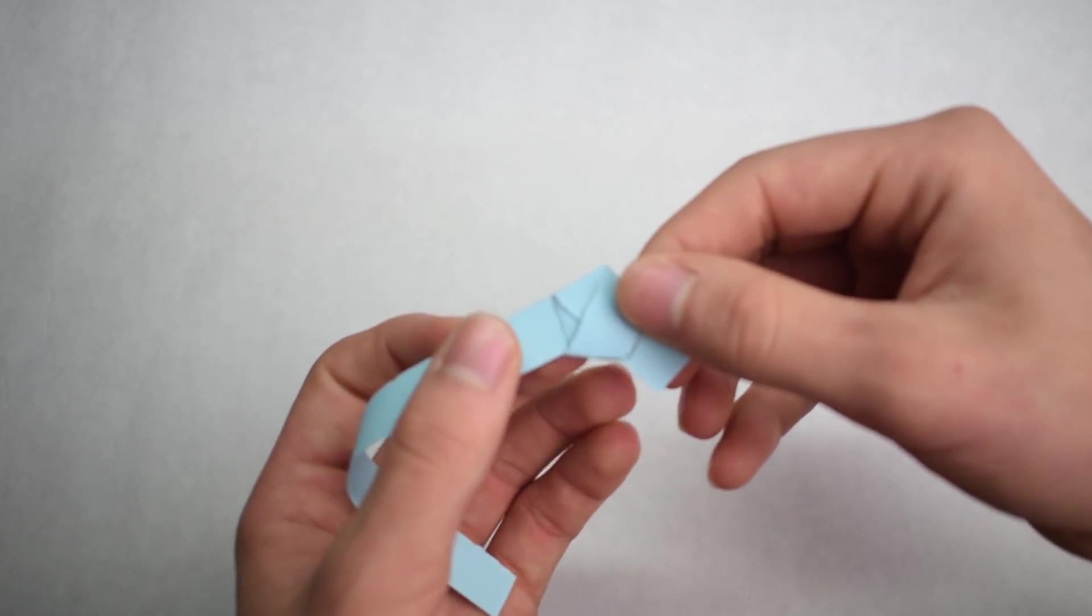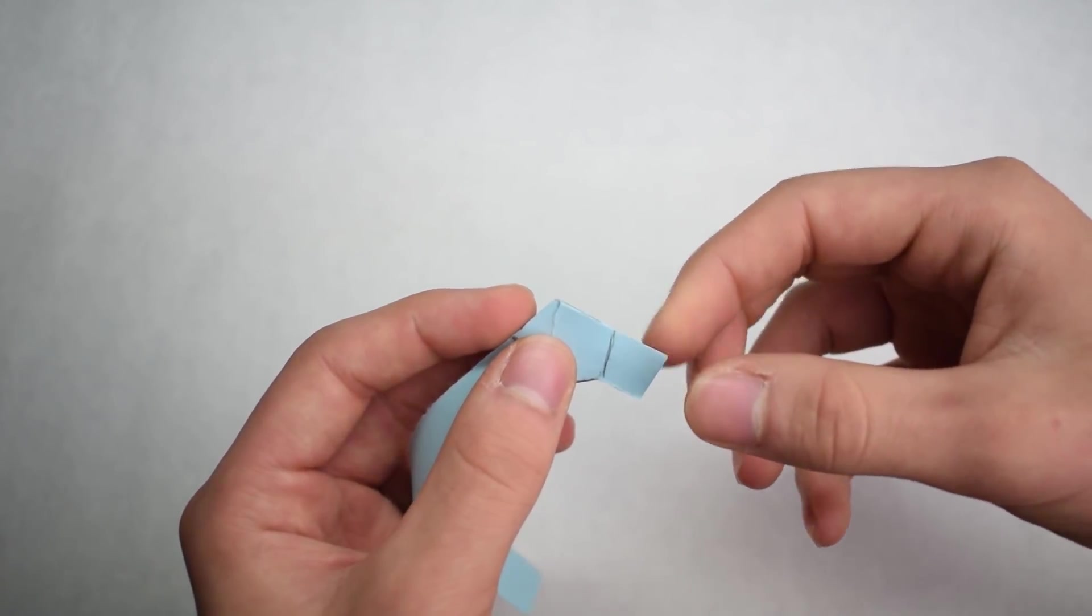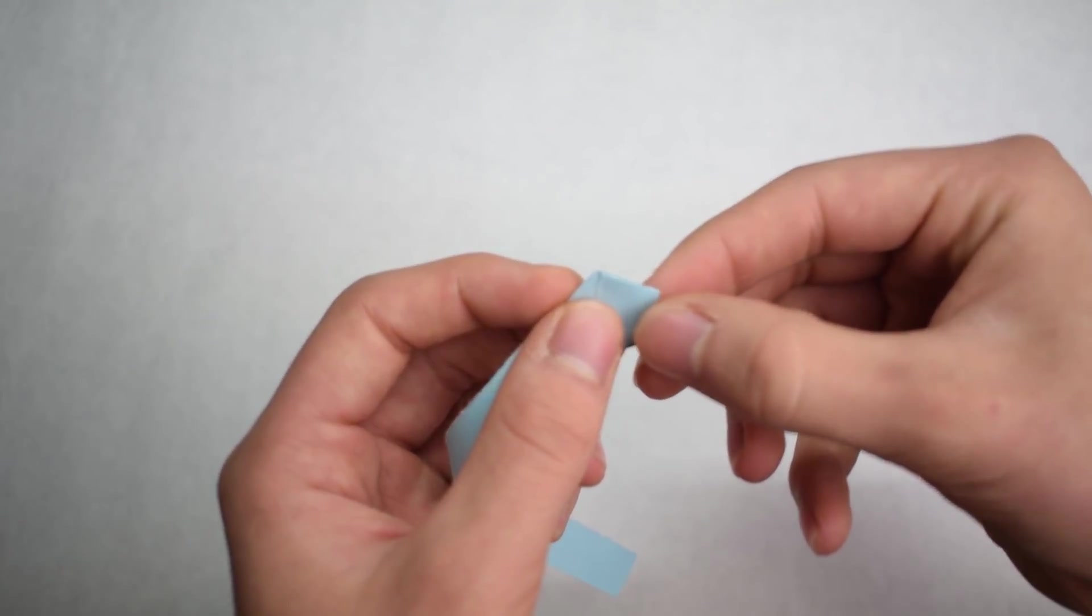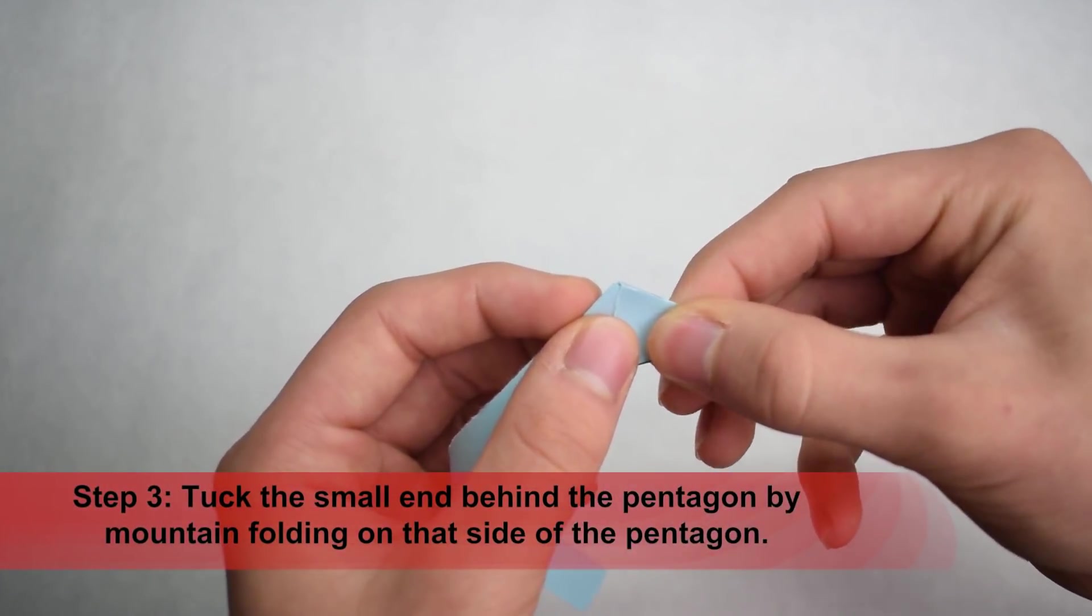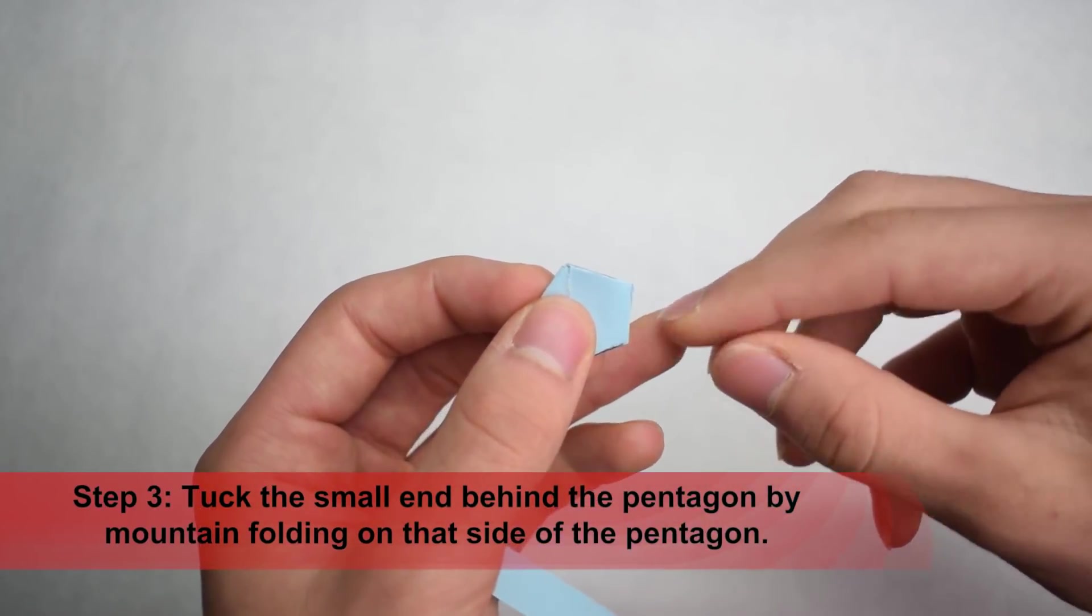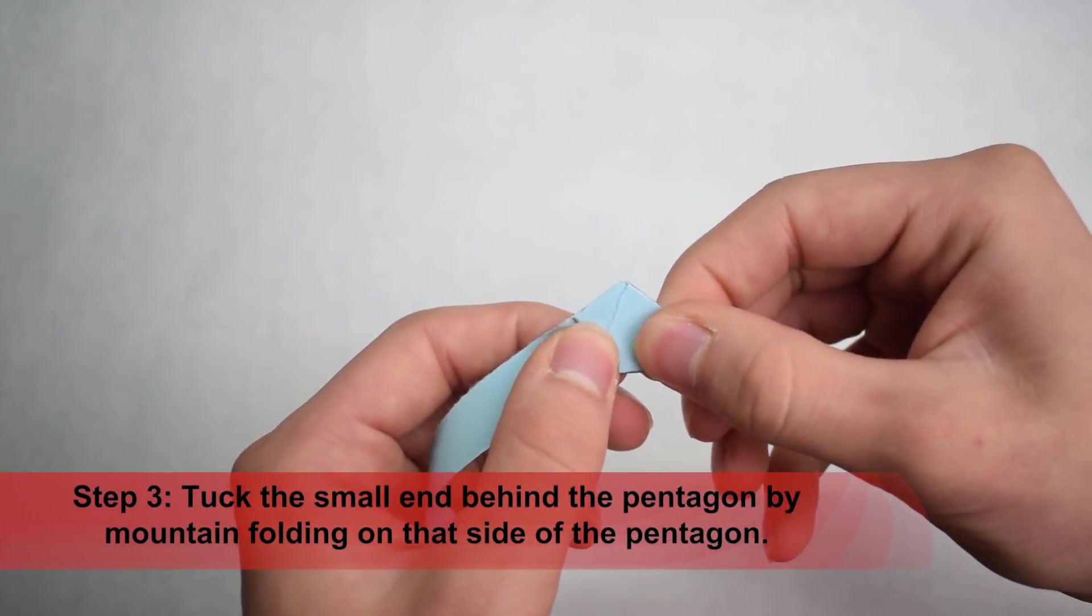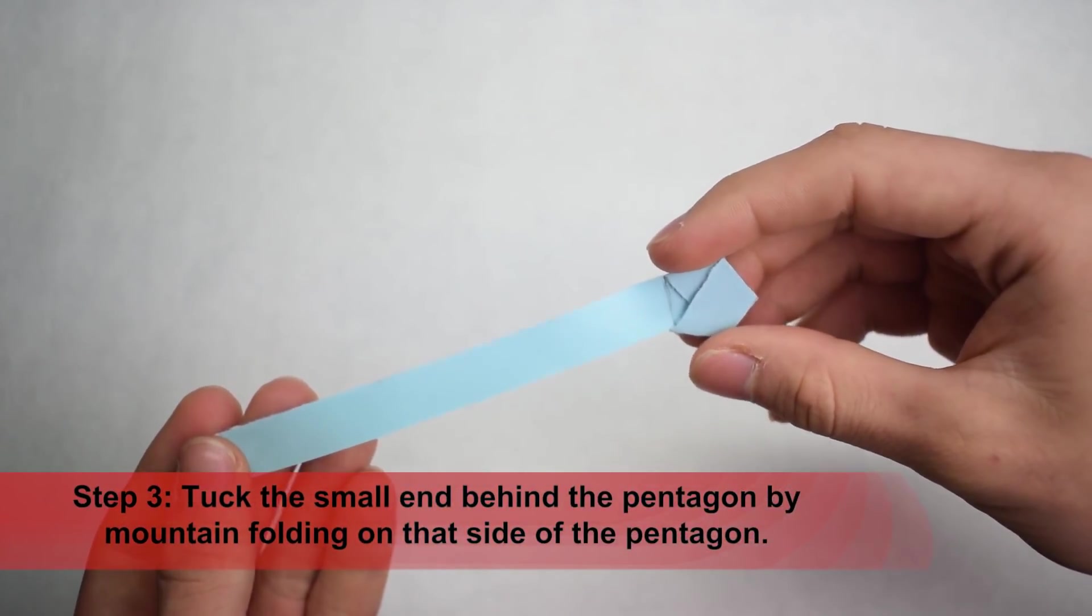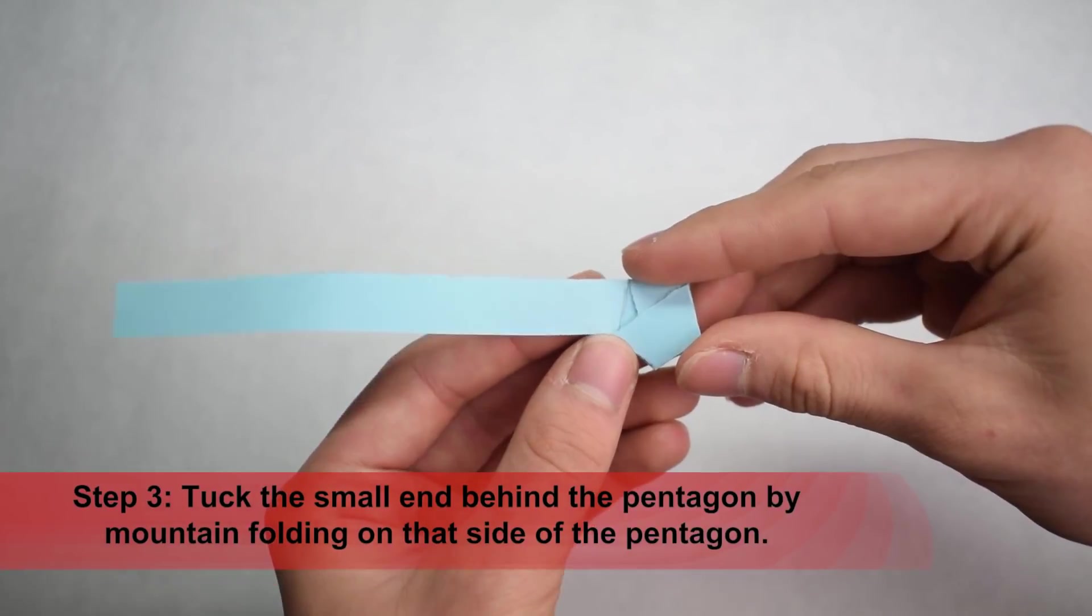That's important to know. Now what we're going to do is get rid of this little tab because this isn't something we want to keep. I'm just going to tuck this back behind, folding along that side of the pentagon right there. Perfect. Now we have this pentagon on the end of a string.